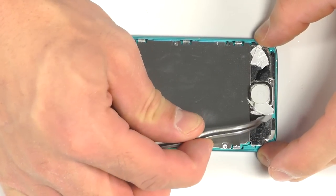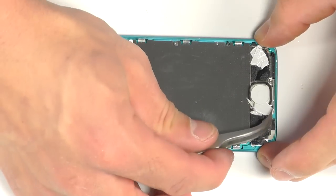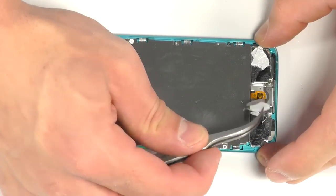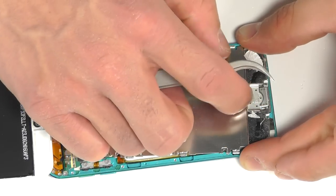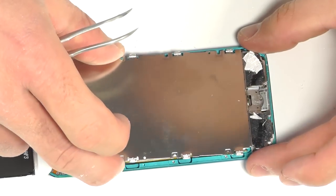Before peeling up that plate, let's be sure to remove the home button down near the bottom of the iPod. Peel it away from its securing adhesive, and when we lift the protective plate out, fish the ribbon cable through accordingly.